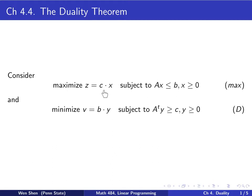We'll consider the following setting with a max problem using matrix vector compact notation. Maximize z equals c dot x subject to the constraint Ax less than or equal to b, x greater than or equal to 0. We refer to this problem as the max problem.